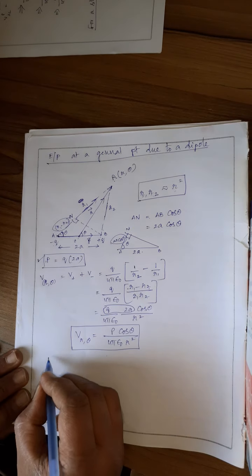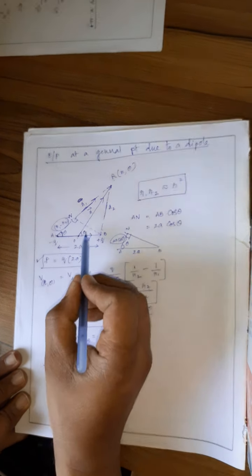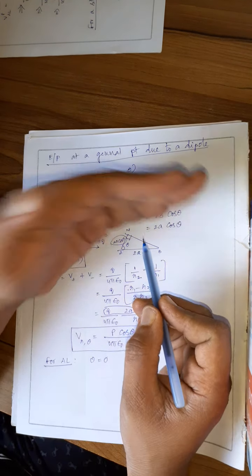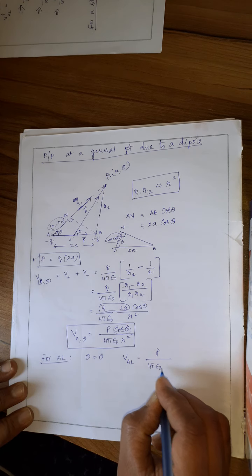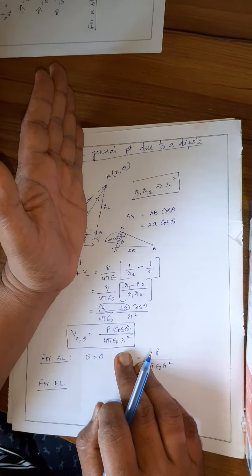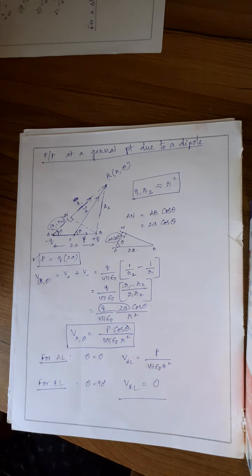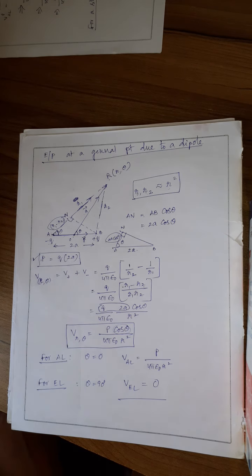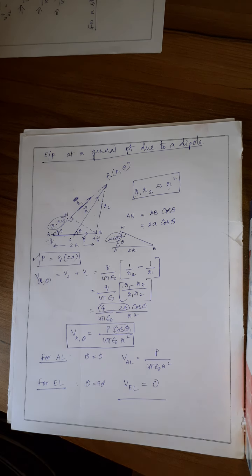From this general expression, for the axial line, theta is 0, so cos 0 equals 1, giving potential as P by 4πε₀R² — consistent with what we derived earlier. For points on the equatorial line, theta becomes 90°, so cos theta is 0, making the potential zero — again consistent. So we have finished the derivation of electric potential due to a dipole at an axial line, equatorial line, and a general point. The first and last derivations are important for exams. The second derivation is important for numericals and one-mark MCQs.